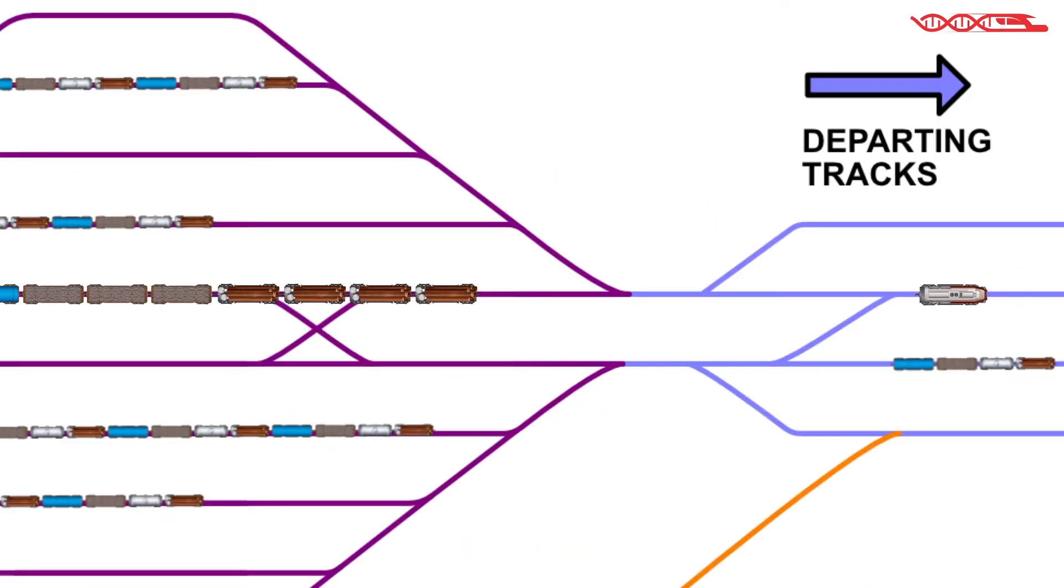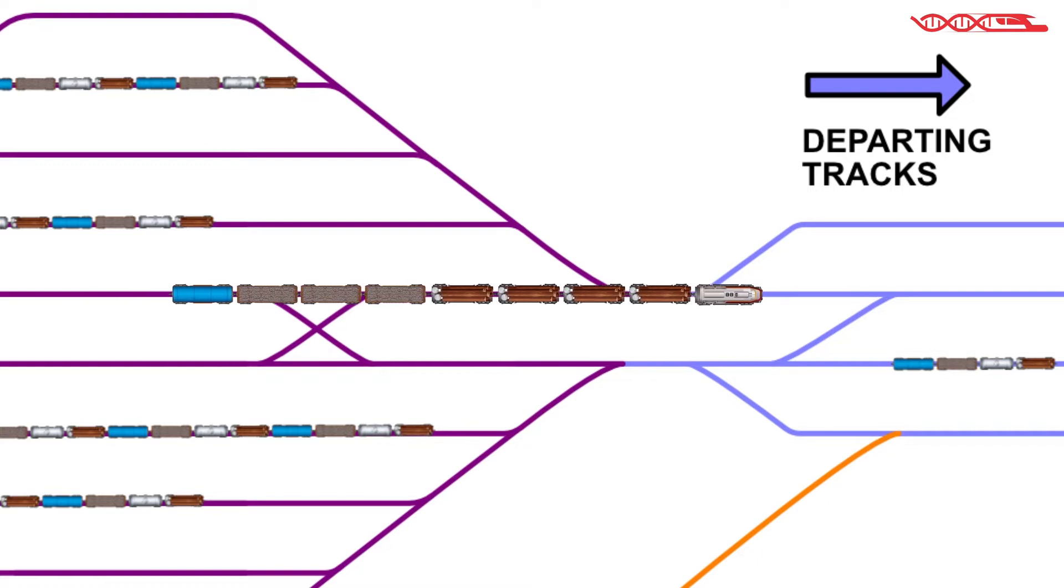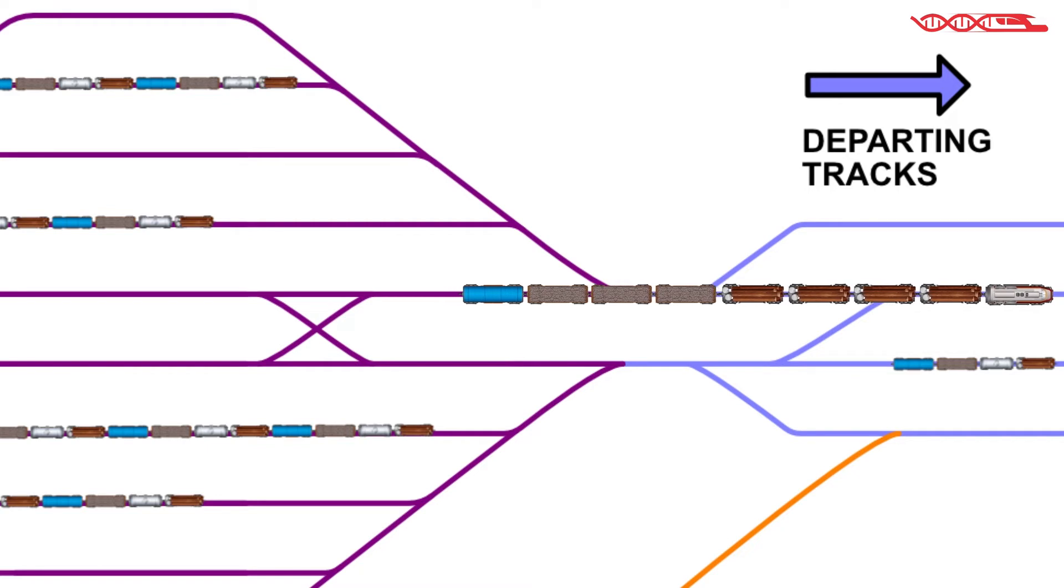On the right side we have departure tracks. This is the place where rail cars arrive after they leave classification tracks. This is usually done by shunting engine. In the departure tracks, rail cars are again assembled for outbound trains but in different composition and for different directions. Each of these trains is attached to a locomotive and in position to depart.